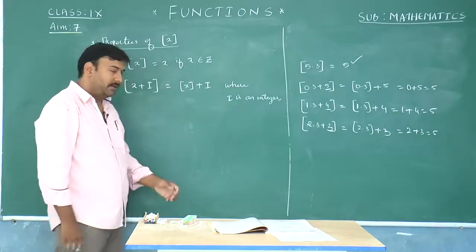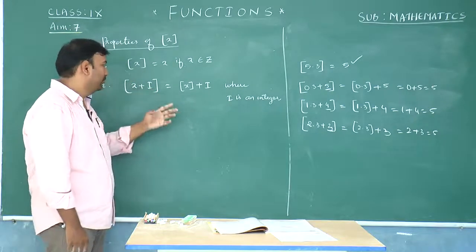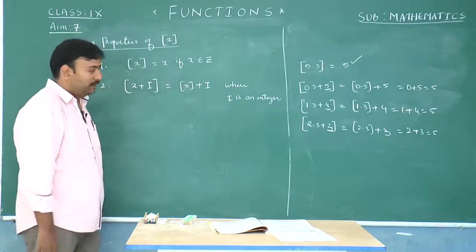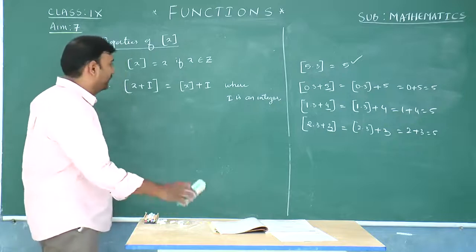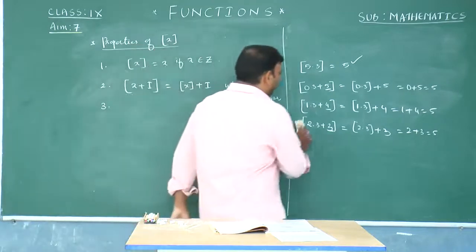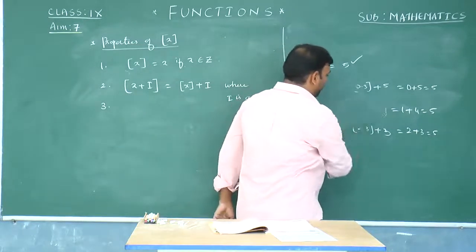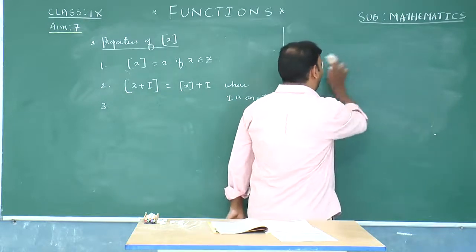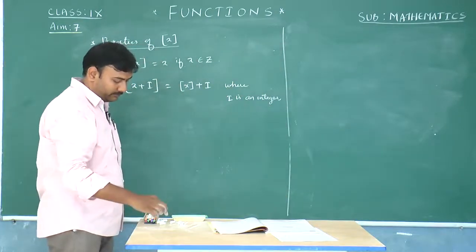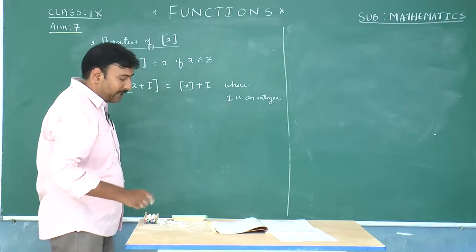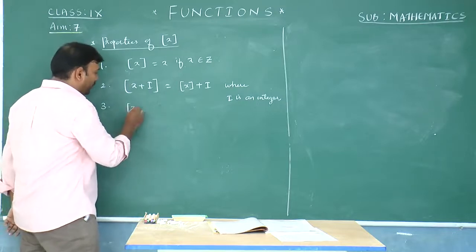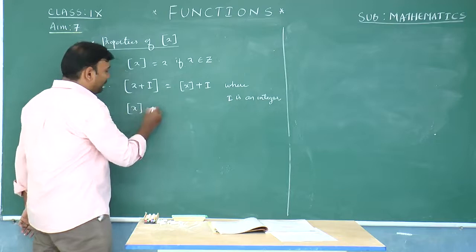Whenever we can write the step of x plus i, where i is an integer, we can take i outside the bracket and just find the step value of the remaining real number part. That is the second property. Now we are going to see how to solve greatest integral value equations and inequations, just as we solved absolute value equations and inequations.